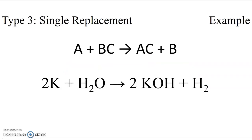Another example of this is the reaction between potassium and water to form potassium hydroxide and hydrogen gas. Here potassium is the singleton element on the reactant side and hydrogen and oxygen make up the compound on the reactant side. It's a little tricky because when potassium replaces the hydrogen in the water compound, it doesn't replace both of the hydrogens — it only replaces one.